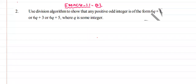Welcome to Naroja Masters Academy, exercise 1.1, question number 2. Use the division algorithm to show that any positive odd integer is of the form 6q+1, or 6q+3, or 6q+5, where q is some integer.